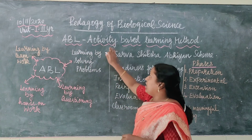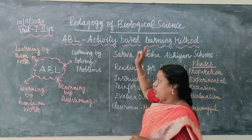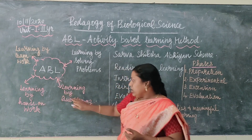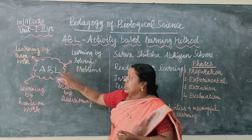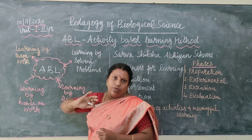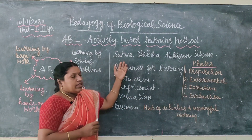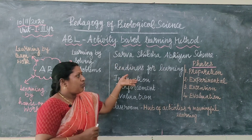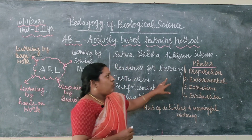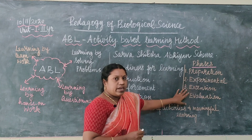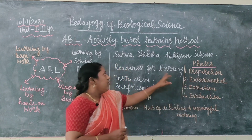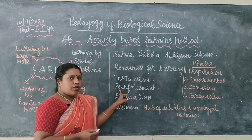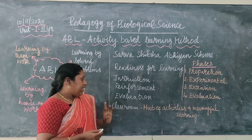To recap: What is ABL? Activity Based Learning. The key aspects are: learning by doing, learning by questioning, learning by solving problems, and learning by teamwork. The ABL steps follow an extension program. It has four phases - preparation, experimental, extension, and evaluation - which correspond to readiness for learning, instruction, reinforcement, and finally evaluation.